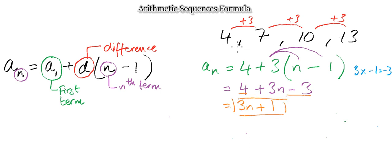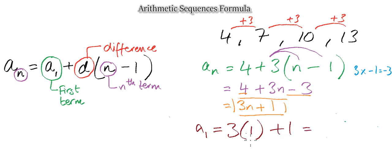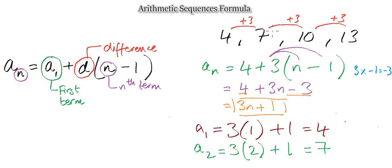Let's test that expression to see if it works. For the first term, a sub one: n equals one, so three multiplied by one plus one equals four — exactly what we have in the sequence. For the second term, a sub two: three multiplied by two plus one equals seven — and we have seven in the sequence. Nice and easy: just follow the formula, plug in the numbers, watch your signs, and you'll always get the correct expression.